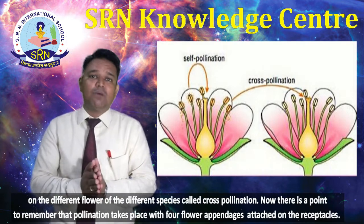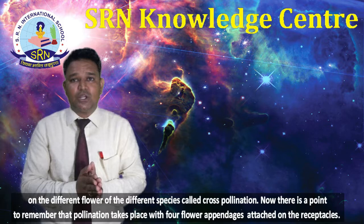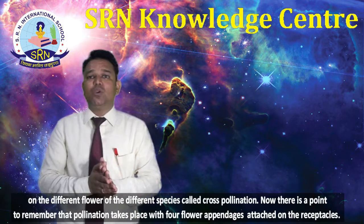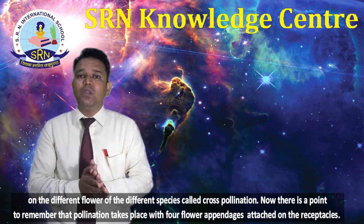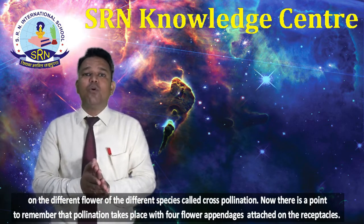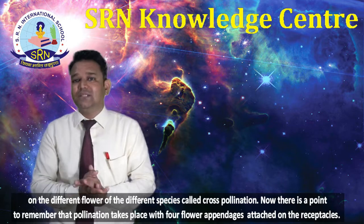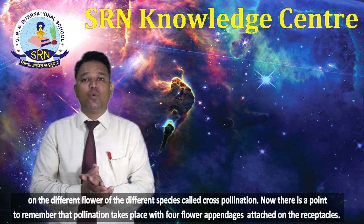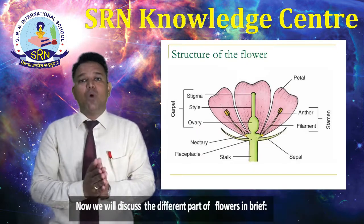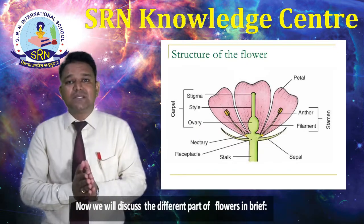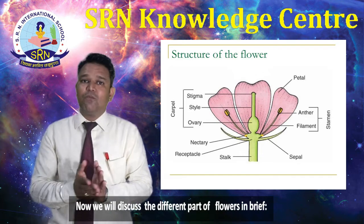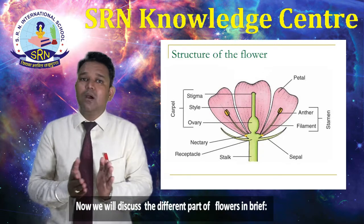In that case we use the term cross pollination. Now, there is a point to remember: pollination takes place with four flower appendages attached on the receptacle. Now we will discuss the different parts of the flower in brief.